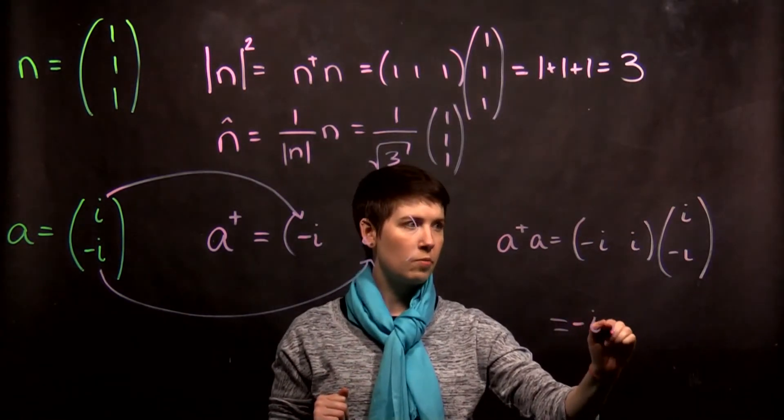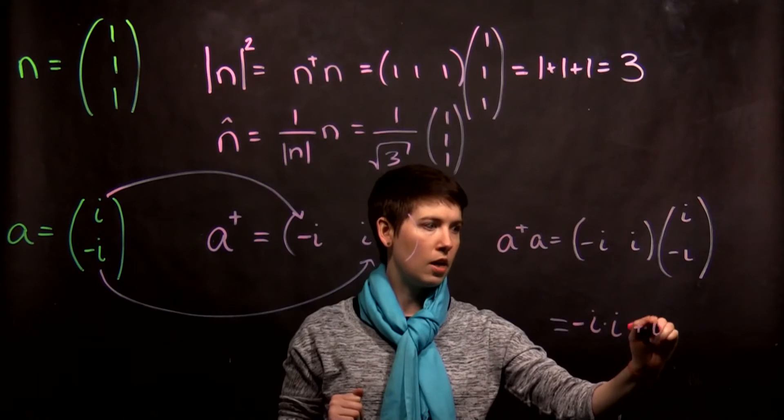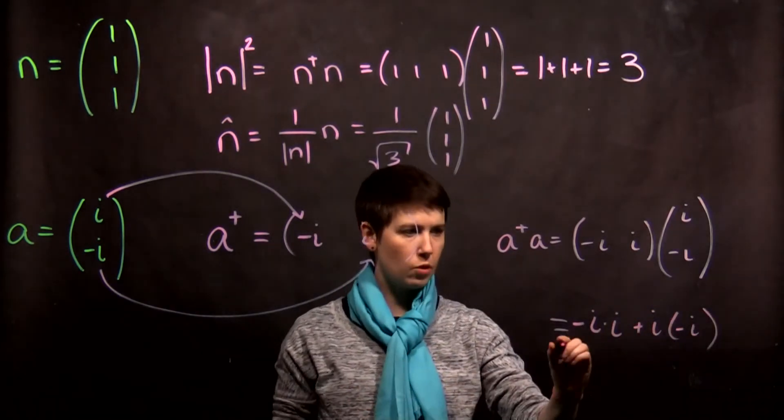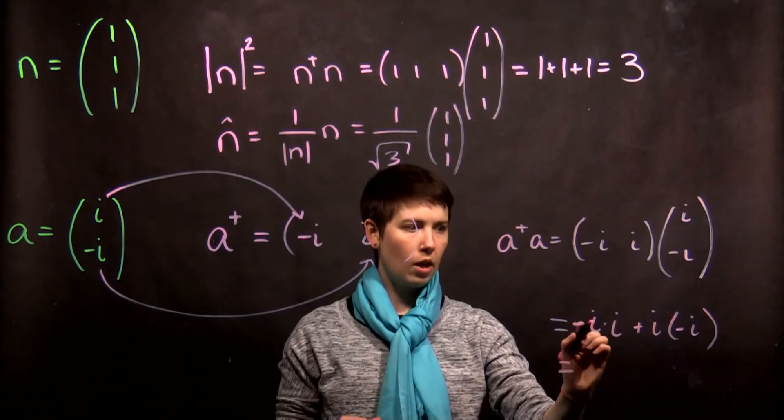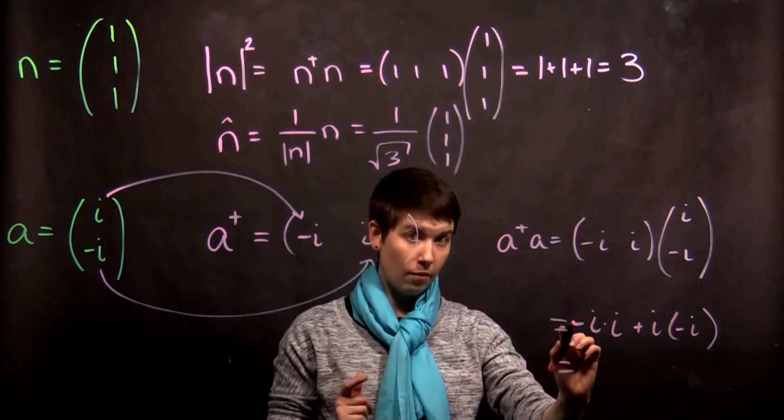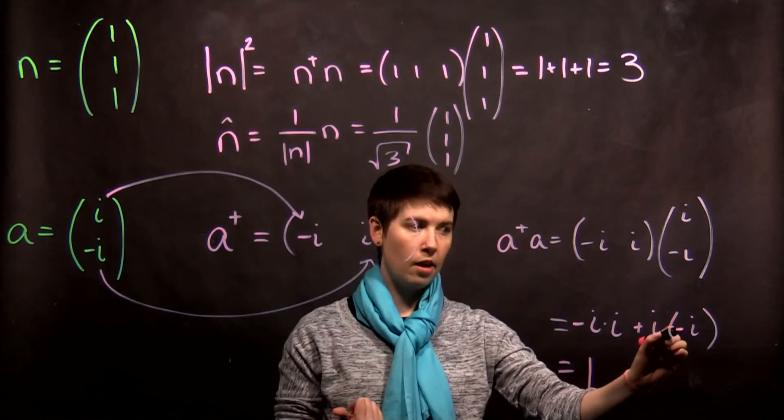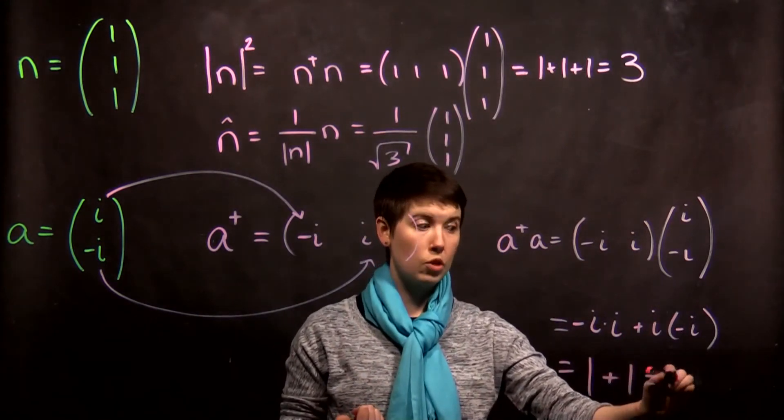We first have negative i times i, and then I have i times negative i. And I've written it out this way so we can be really careful. So, i times i is negative one, and I have another minus sign, so this is one. i times i is negative one, I have another minus sign, this is plus one. So, this is two.